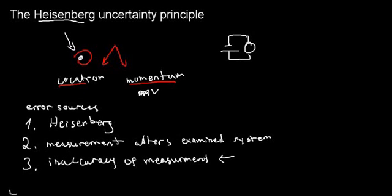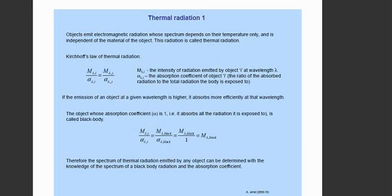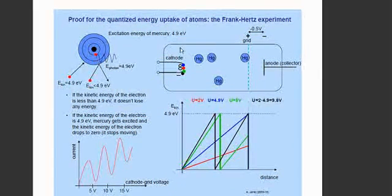Those are the three error sources — just breeze through them. I wouldn't expect an open essay question about them, but it's good to know. Now let's get to the important guts of this video: the Franck-Hertz experiment. This is an important experiment to understand — I've seen it well represented in exams. Some people find it complicated, but if we break it down you'll see it's really easy. I'm going to draw it from scratch because I find it easier that way.